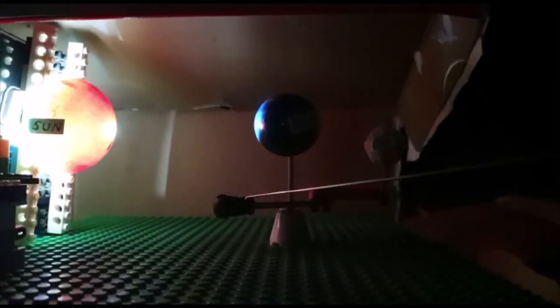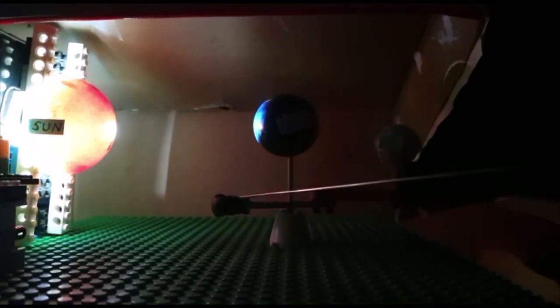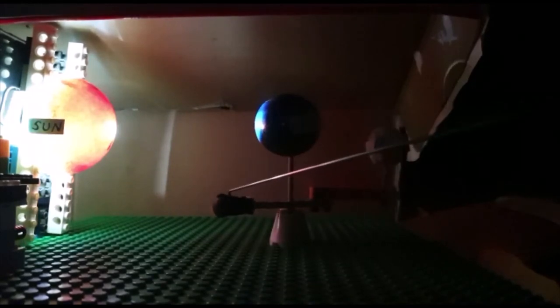As the moon revolves around the earth, there comes a time when the earth comes in the middle of the moon and the sun. This is called the solar eclipse. As you can see here the moon is in the shadow of the earth.